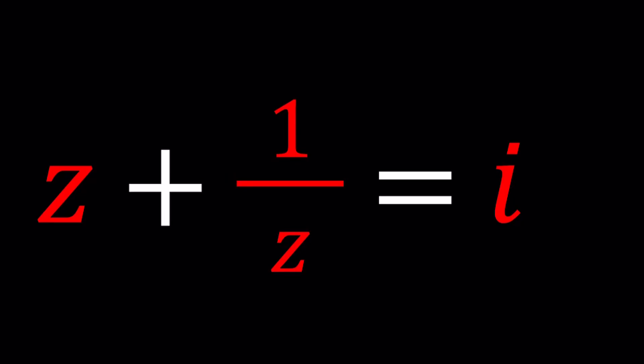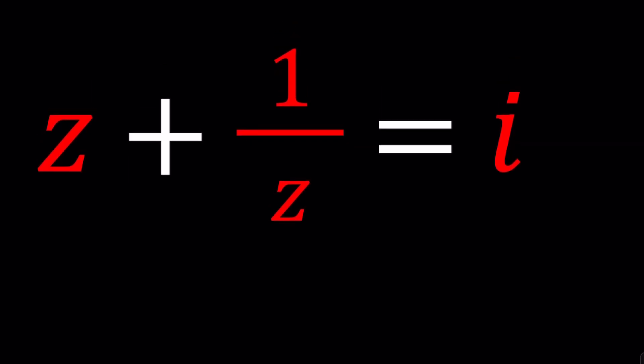Hello everyone, welcome to A plus BI. This channel is all about complex numbers and in this video we're going to be solving an interesting problem with complex numbers. We have Z plus 1 over Z, which is the reciprocal of Z, equals i. So we have to find a complex number such that that number and its reciprocal are added, we get i. Is this possible? Let's go ahead and find out. I'll be presenting two approaches and let's start with the first one.